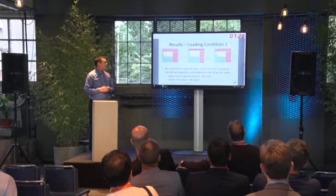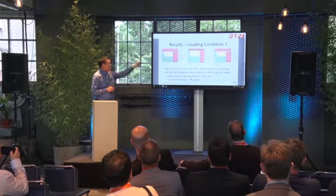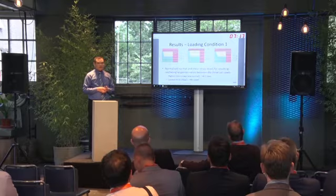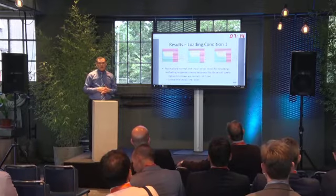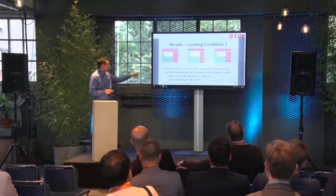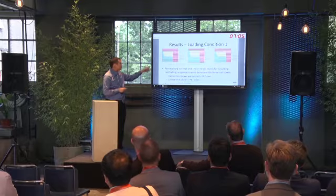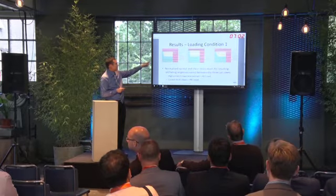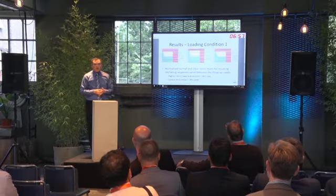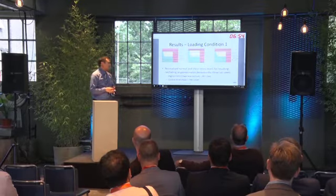Here are the results for all three rail steels under loading condition one. For all the graphs, the y-axis is the normal stress normalised by the cyclic yield strength of the rail material, while the x-axis is the shear stress amplitude normalised by the cyclic shear yield strength. Different colours correspond to different material responses: green for elastic, blue for elastic shakedown, yellow for plastic shakedown, and red for ratcheting. From the results, we can see that the normalised normal and shear stress levels for the resulting ratcheting response vary between different rail steels.